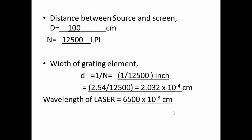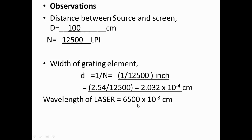Coming to the observations recorded before doing the experiment: capital D, the distance between source and screen, is taken as approximately 100 centimeters. N = 12,500 LPI if using the 12,500 lines per inch grating, or N = 15,000 LPI for the 15,000 LPI grating. The grating element width d is calculated by replacing one inch as 2.54 centimeters. The wavelength of the laser is 6500 angstroms, written as 6500 × 10⁻⁸ centimeters.